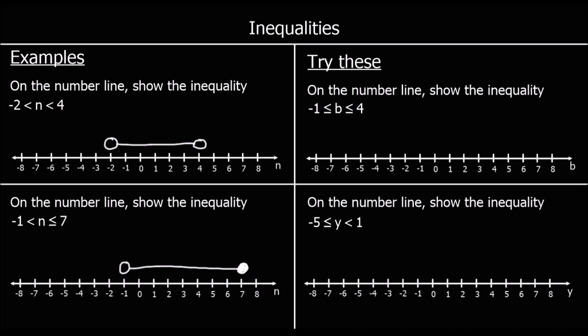Two more for you to try — pause the video and give these a go. This time we're looking at B. On the number line, show the inequality: B is bigger than or equal to negative 1 and less than or equal to 4. So we colour in negative 1 and we colour in 4, because it can equal both. They're both coloured in and we join them up.